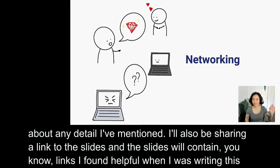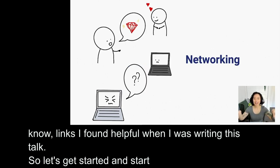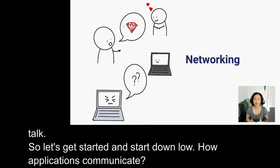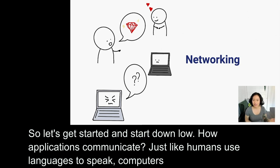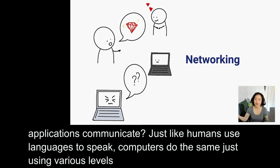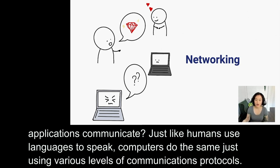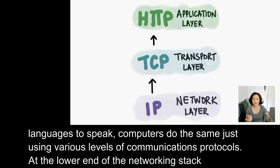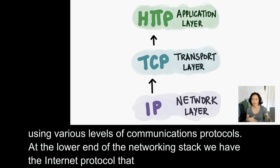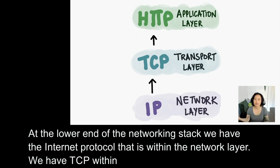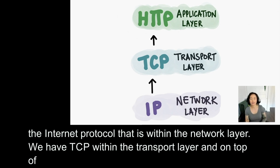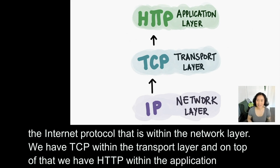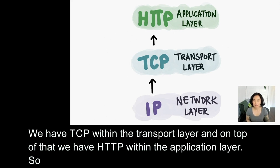Let's get started and look at how applications communicate. Just like humans use languages to speak, computers do the same, just using various levels of communications protocol. At the lower end of the networking stack we have the Internet Protocol, which is within the network layer. We have TCP within the transport layer, and on top of that we have HTTP within the application layer. We'll be talking about all three layers in this talk.